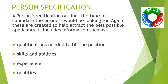Alongside the job description, a person specification is prepared. This outlines the ideal candidate the organisation would like to have. The four main pieces of information it contains are: qualifications required to fill the position, skills and abilities of the potential employee, previous experience, and any qualities they have. This is created to attract the best possible candidates and ensure applicants who don't fit the criteria are unlikely to apply.